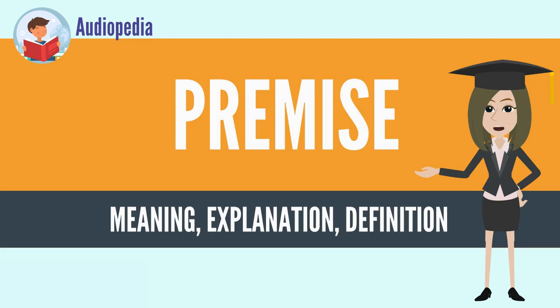Aristotle held that any logical argument could be reduced to two premises and a conclusion. Premises are sometimes left unstated, in which case they are called missing premises.